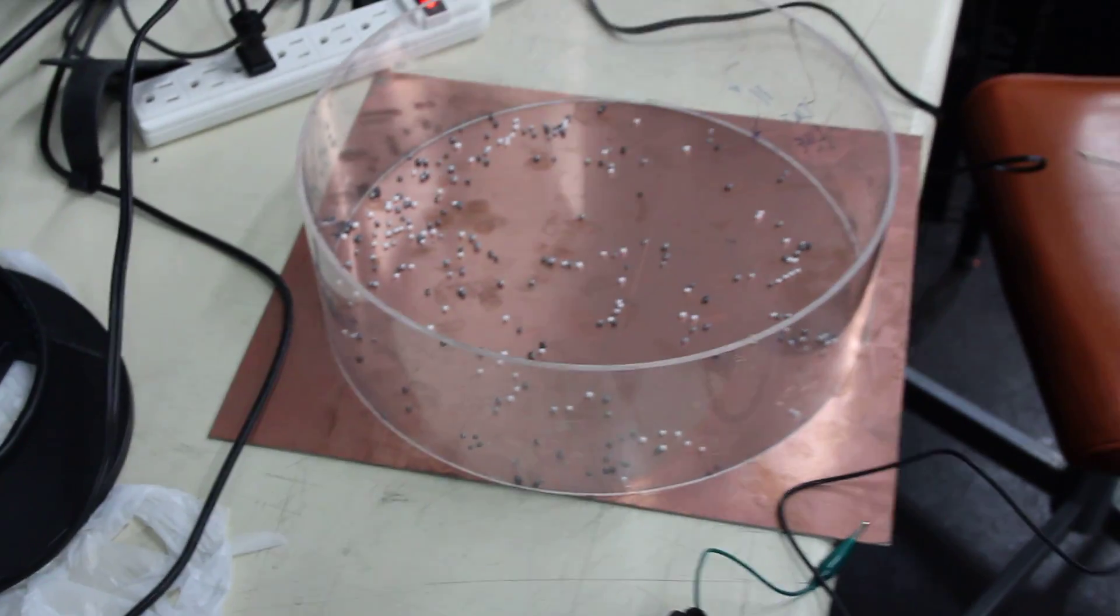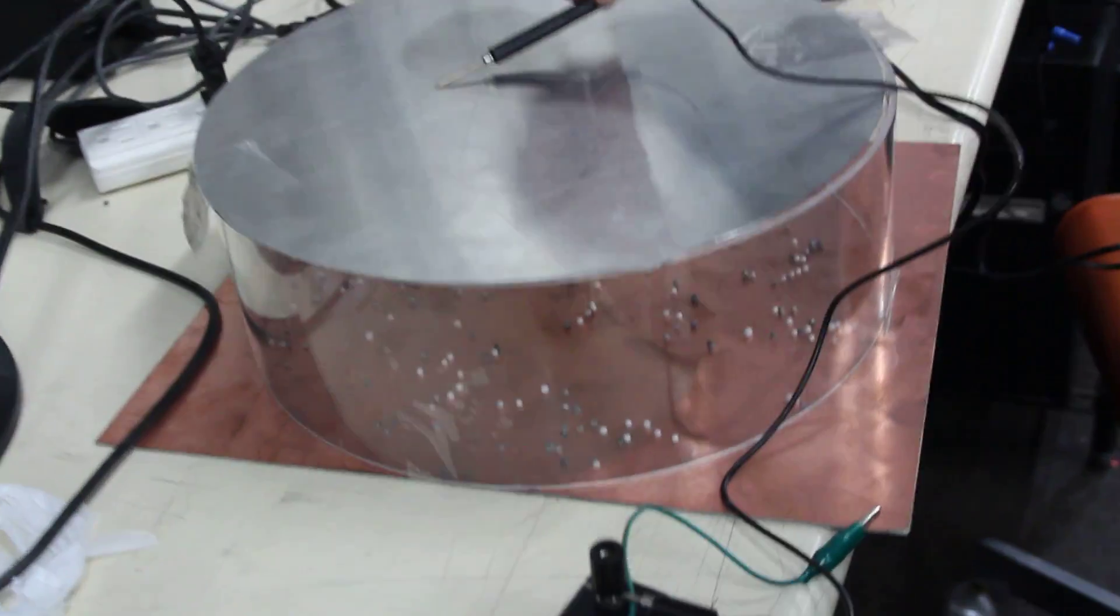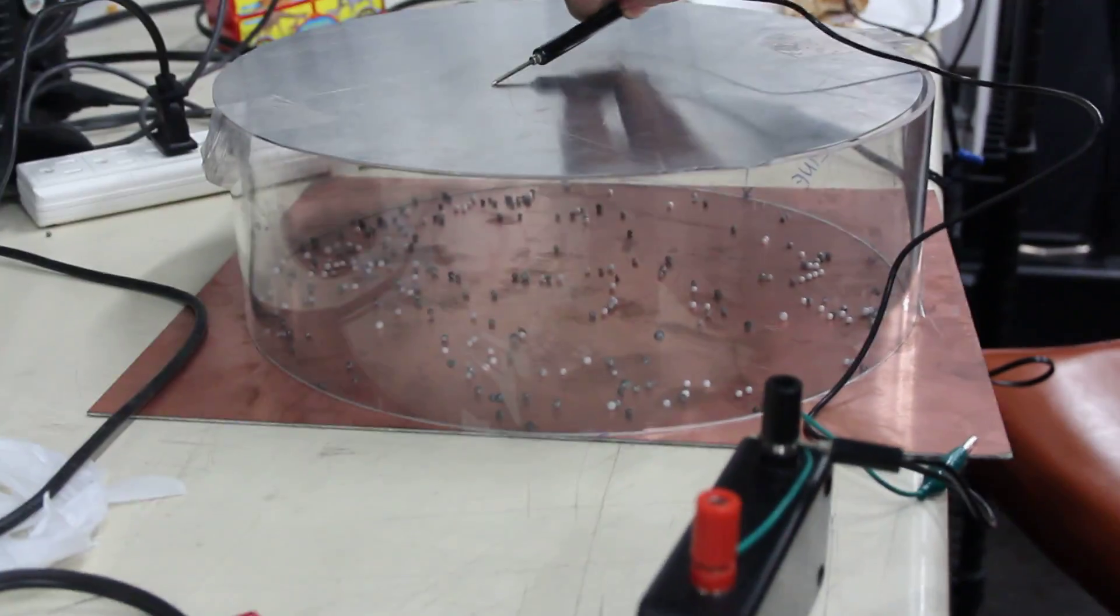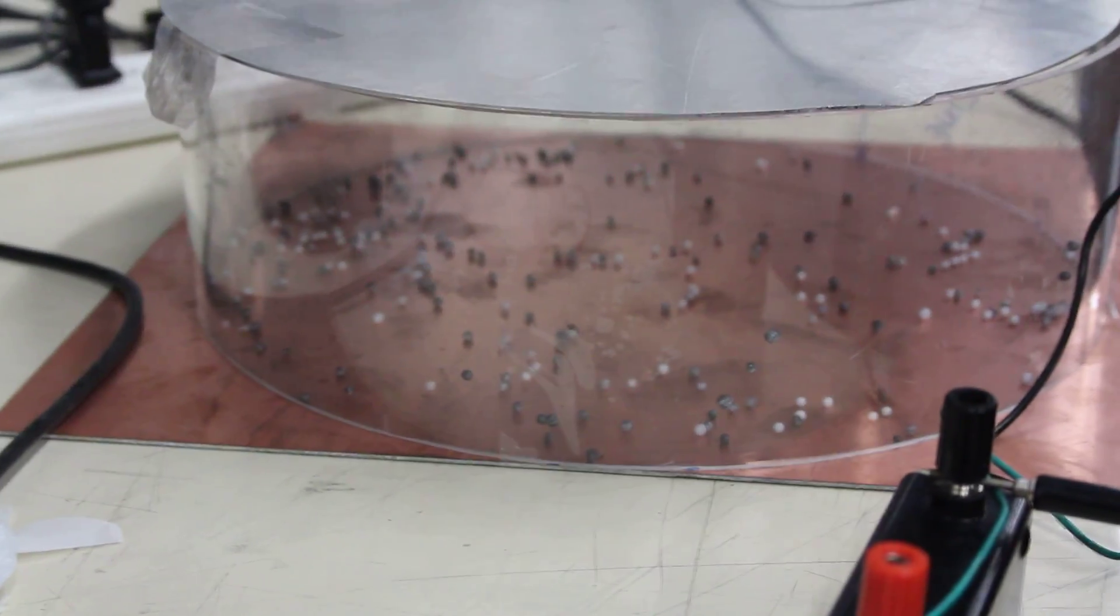So what we really need is to look through the side. Well this one has voltage, and there goes a handful of them. This voltage is pretty low for getting the effect.